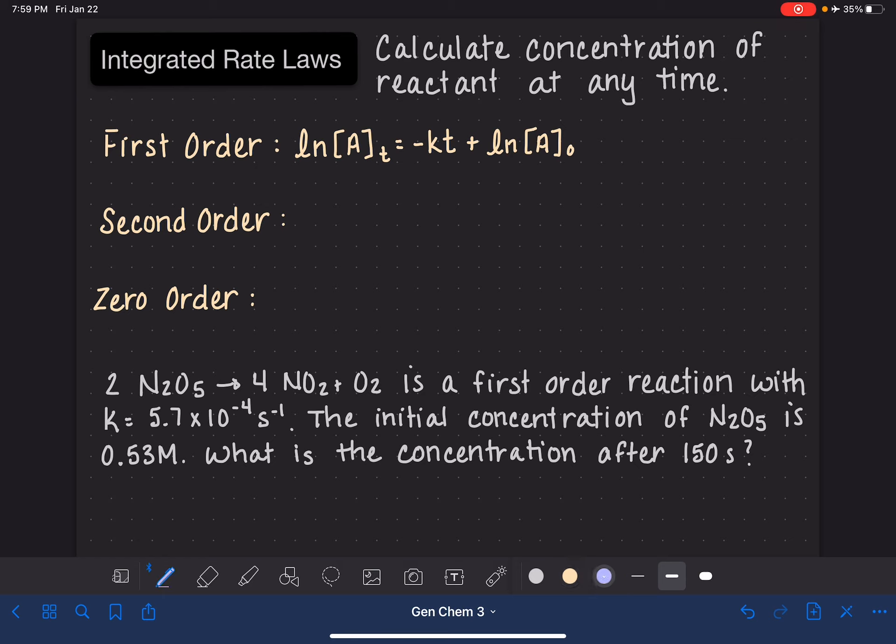So let's write some of these symbols down. T is referring to the time that we're interested in calculating the concentration for, whatever the time might be. K is the rate constant that will be provided to you. A with that subscript zero symbol is used to represent the initial concentration of that reactant A. And then A with that subscript T symbol is used to represent the concentration of reactant A at whatever time we are interested in doing this calculation for.